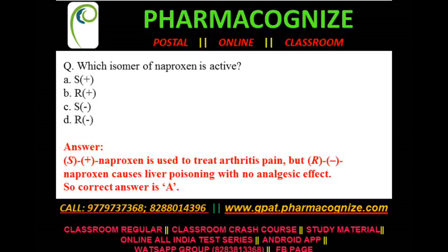Last, fifth question: which isomer of naproxen is active? Option A is S plus, option B is R plus, option C is S minus, option D is R minus. The S plus isomer of naproxen is used for arthritis pain, but the R minus isomer causes liver poisoning and has no analgesic effect. So the correct answer is A, the S plus isomer of naproxen. Thank you.